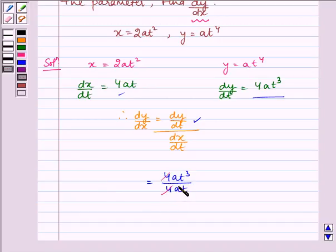4 and 4 get cancelled, a and a get cancelled, and t cancels with one t from t³. So we are left with t²